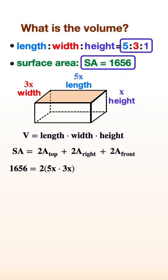So the area of the top is 5x times 3x, the right is x times 3x, and the front is 5x times x.